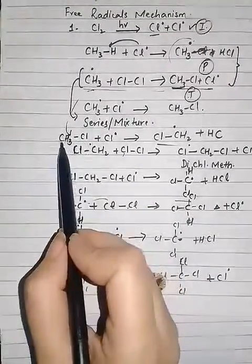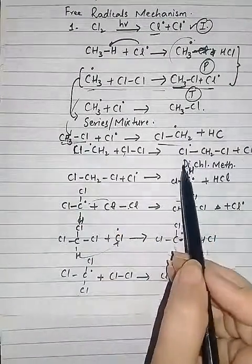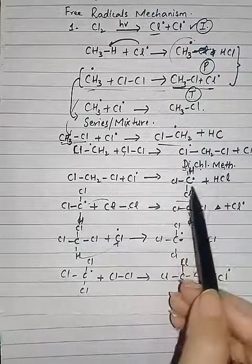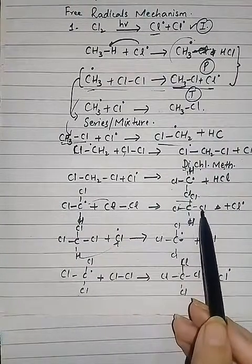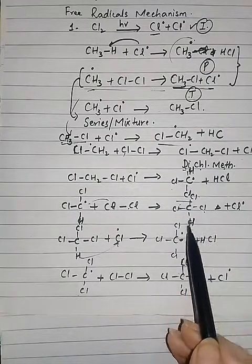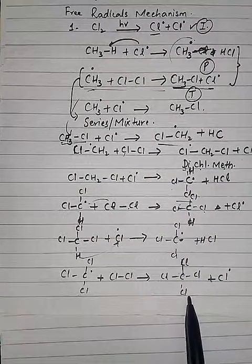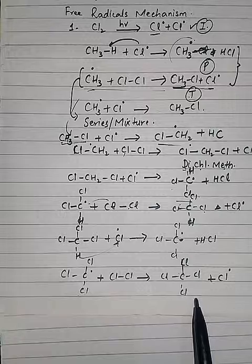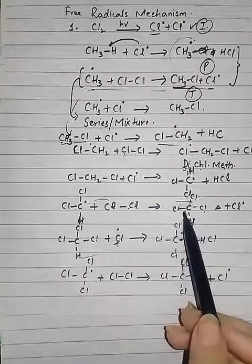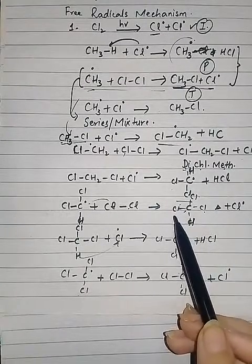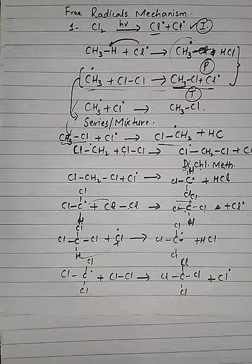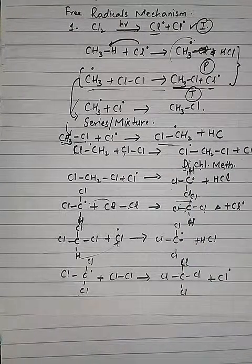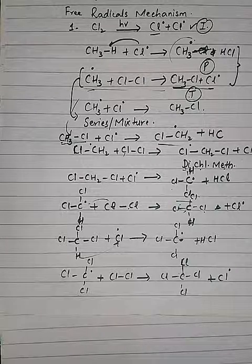As you can see, the second step is the basis of the whole halogenation series. First it was methyl chloride, then it converted into dichloromethane, then it became trichloromethane with three chlorine molecules, and ultimately tetrachloromethane or carbon tetrachloride. Trichloromethane is known as chloroform. This is all about the halogenation.